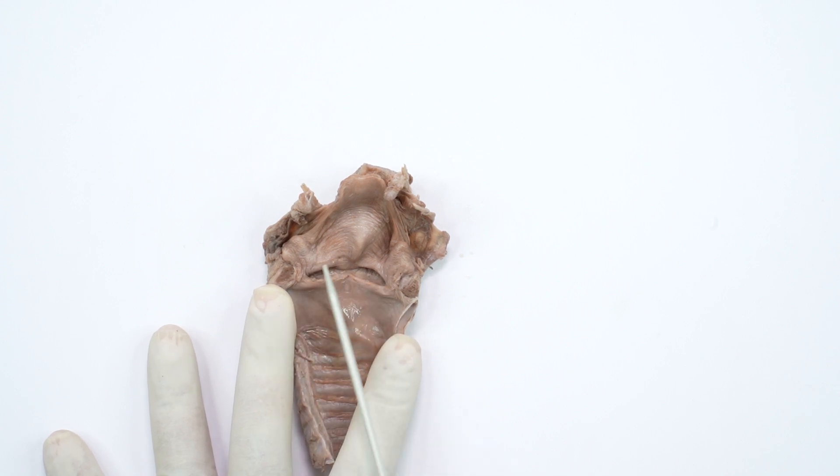The vestibular folds are formed by the vestibular ligament which is covered by mucous membrane. The vocal folds are formed by mucous membrane covering the vocal ligament and the vocalis muscle.